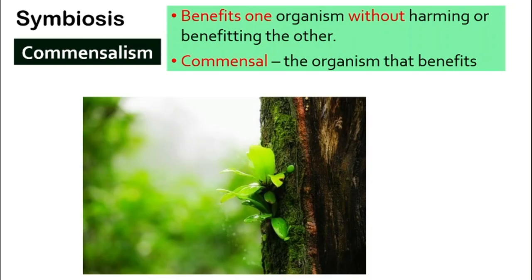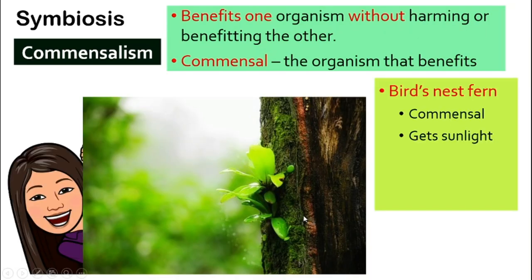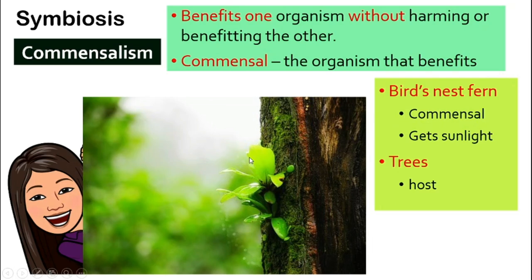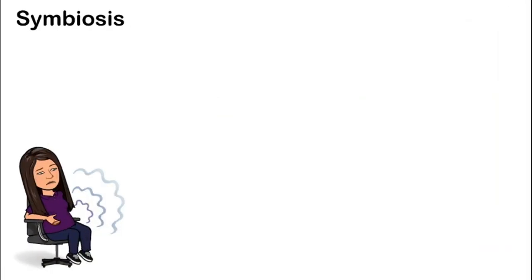Let's look at one more example: the bird's nest fern. It attaches itself and lives between the branches of a big tree. Because it is a very small, short plant, it would not get enough sunlight if it lived at the bottom of a jungle. So the bird's nest fern is the commensal — the one that is very happy — while the tree is just the host; it doesn't care, it does not get hurt and does not gain anything. This relationship is called commensalism.